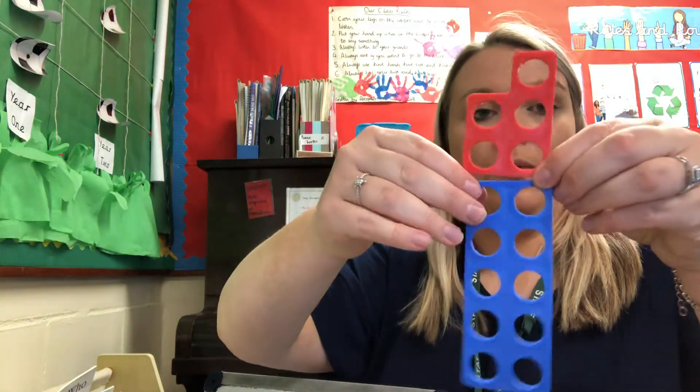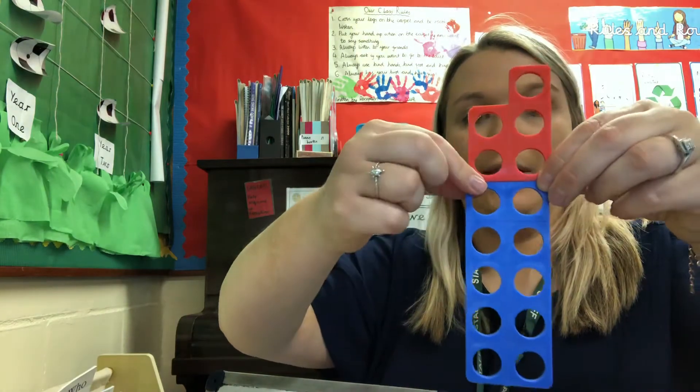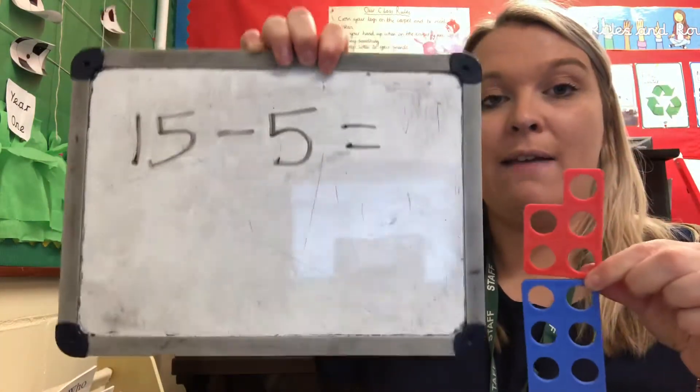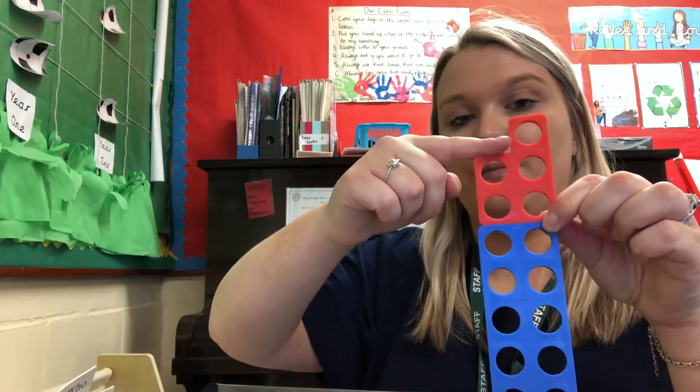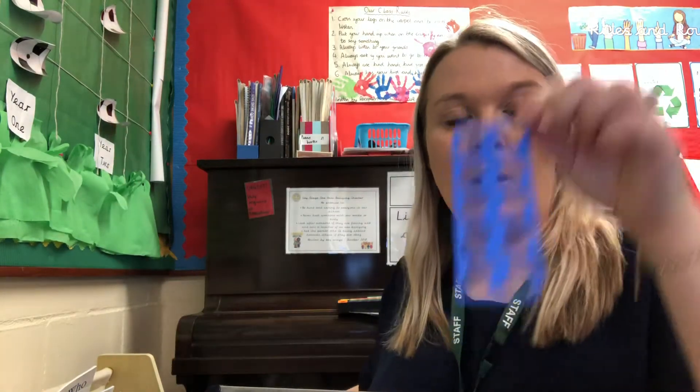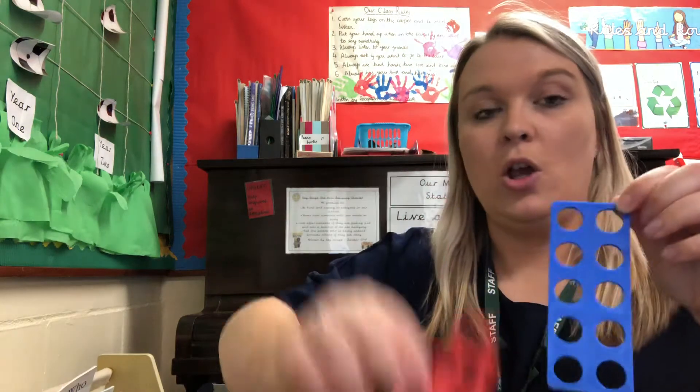So, that's our Numicon there. We're going to pretend they're kind of stuck together now. We are taking away a 5. There's two ways we could do this. Now, we've already got two pieces, even though we're all pretending they're stuck together. I know that this is a 5. So, I can take that off. And what am I left with? 10. Well done. So, we know that 15 take away 10, take away 5 is 10.